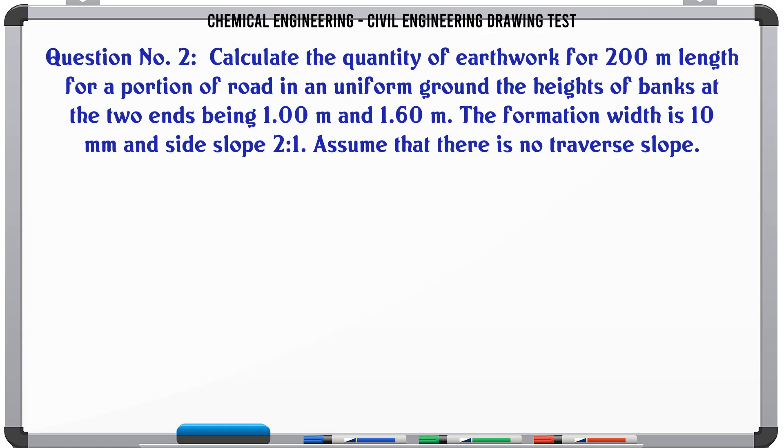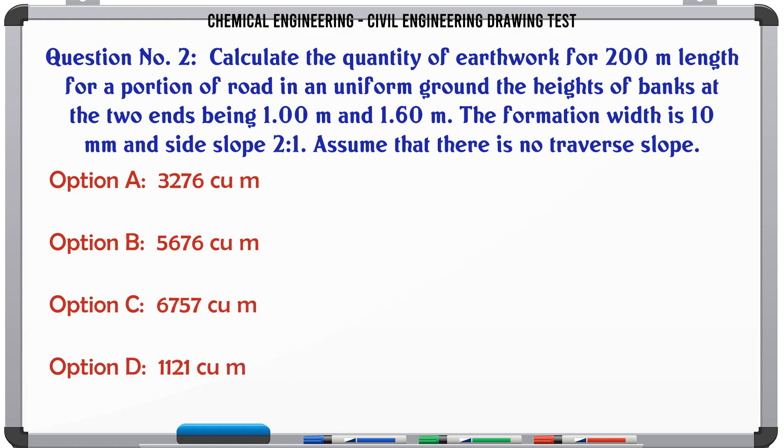Calculate the quantity of earthwork for 200 m length for a portion of road in an uniform ground. The height of banks at the two ends being 1.00 m and 1.60 m. The formation width is 10 mm and side slope 2:1. Assume that there is no traverse slope. A. 3,276 cu m. B. 5,676 cu m. C. 6,757 cu m. D. 1,121 cu m.